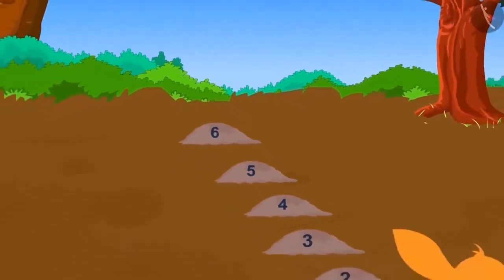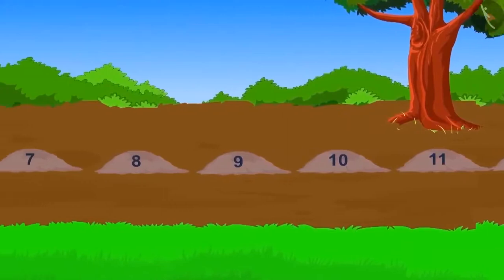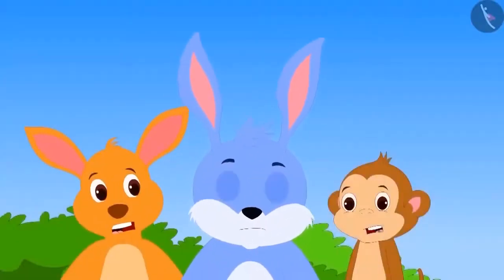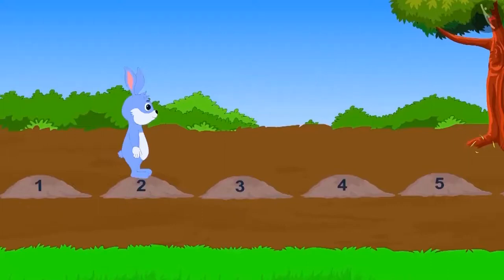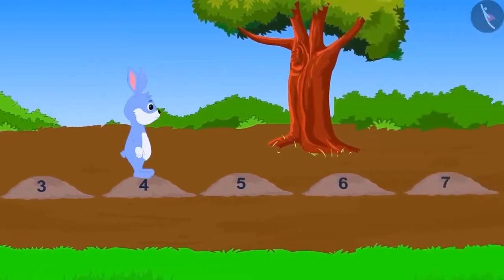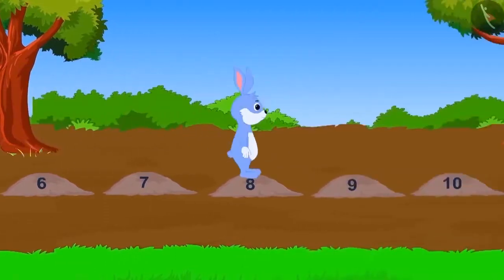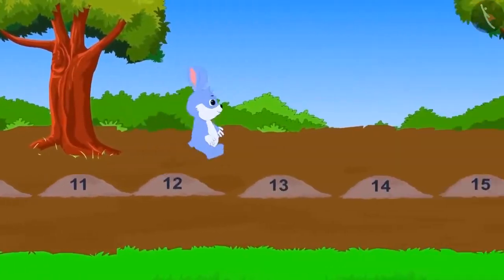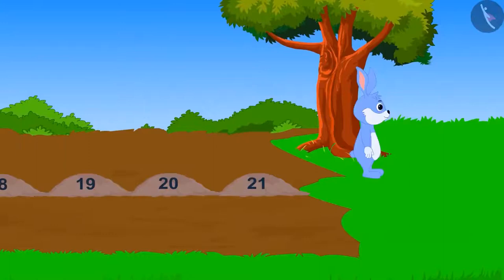They reached near a swamp while looking for their way. They saw some stones in the swamp. First, bunny tried to cross the swamp. He jumped two steps in one jump and reached the second stone. Then he took another jump and reached the fourth stone. In the third jump, bunny reached the sixth stone. This way, jump after jump, bunny moved two steps ahead in every jump and in the end crossed over from the twentieth stone.